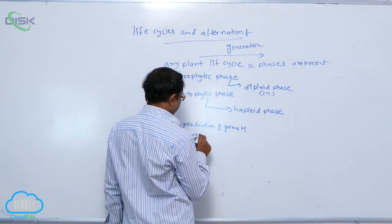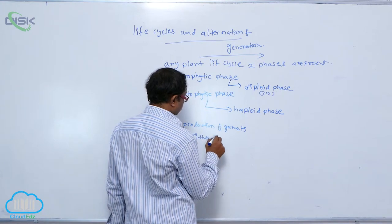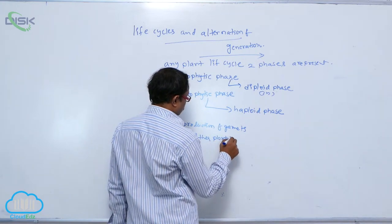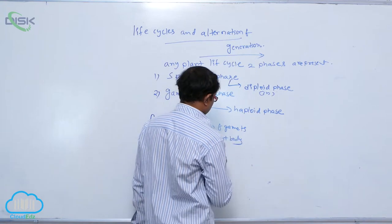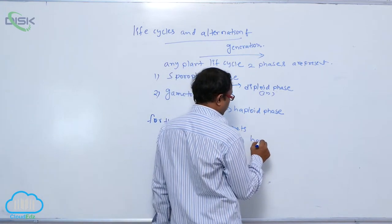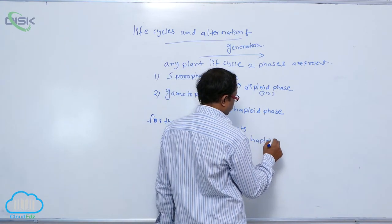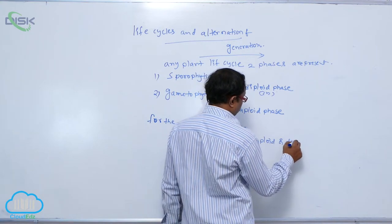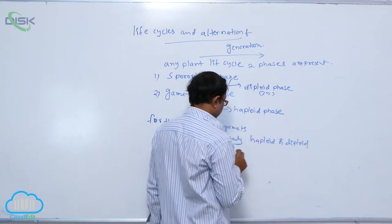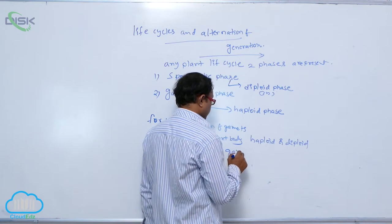Either plant body is haploid or diploid, gametes are always haploid condition.